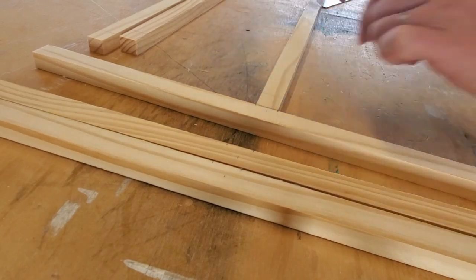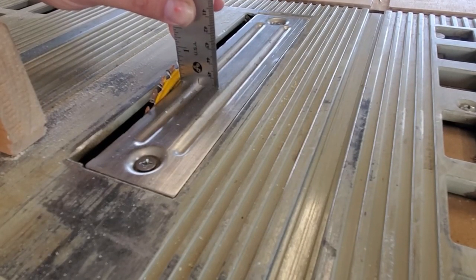I mark out where I want my lap joints and cut them out on the table saw.